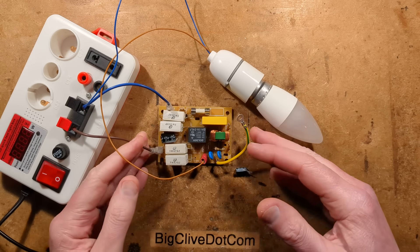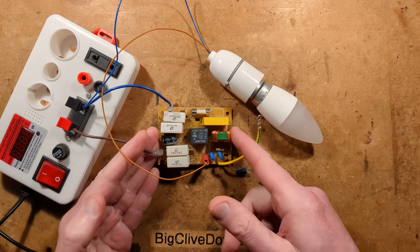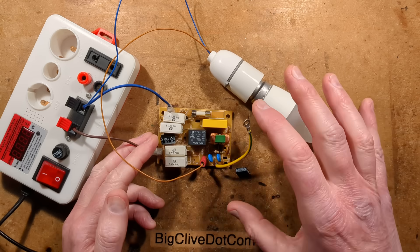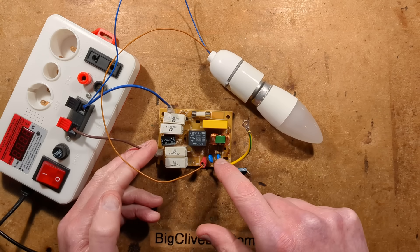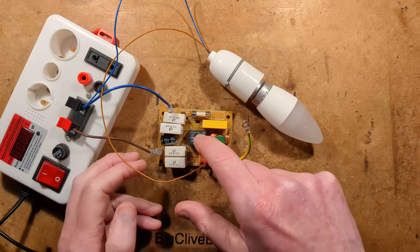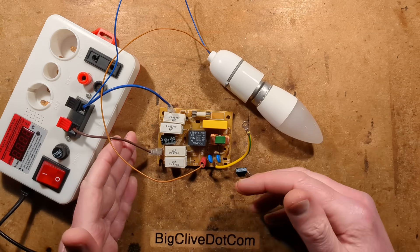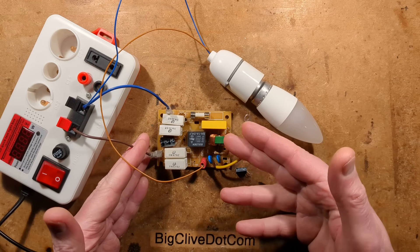A while ago I took apart a microwave oven and found this mysterious circuit board. I could see there was some filtering circuitry, but there was also a relay and banks of power resistors. I put it aside because I thought it'd be quite fun to reverse engineer later on.